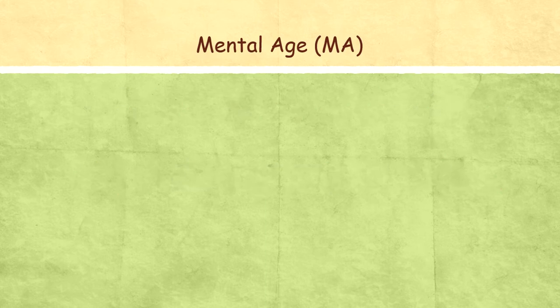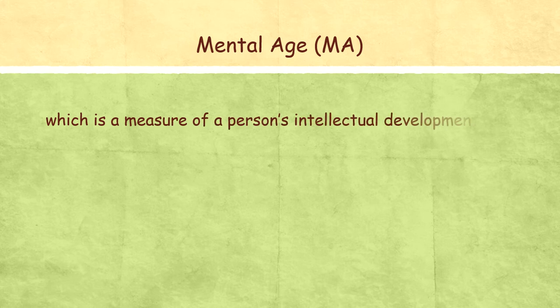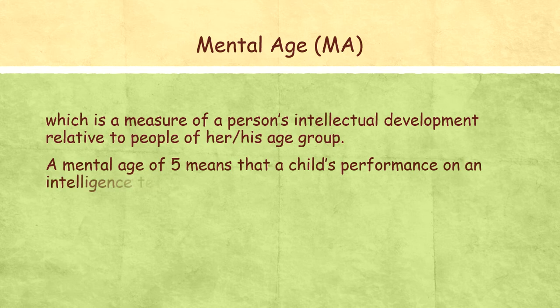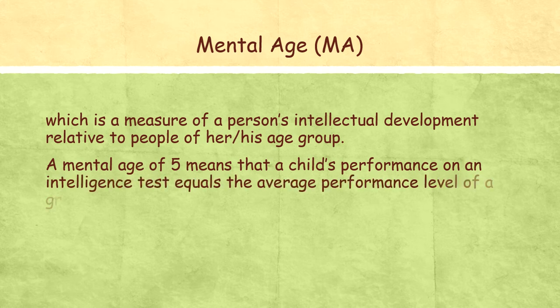Now we see what is mental age and what is chronological age. Mental age is a measure of a person's intellectual development relative to a person of his or her age group. A mental age of 5 means that the child's performance on an intelligence test equals the average performance level of a group of 5-year-olds. There is a certain ability that should be expected as per the age.